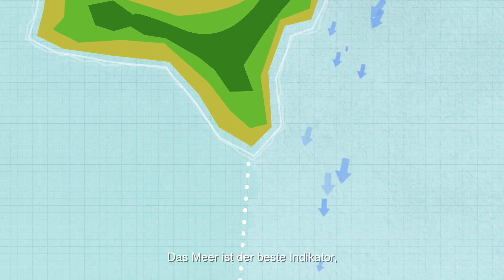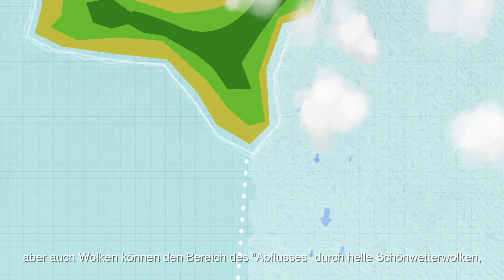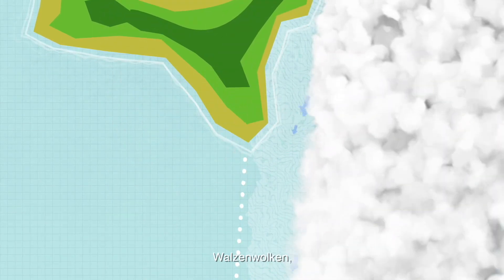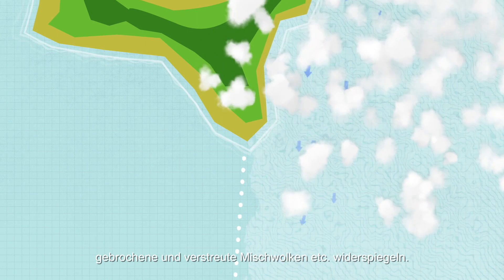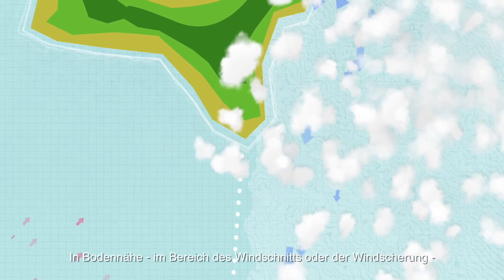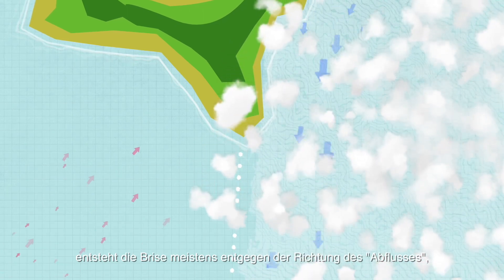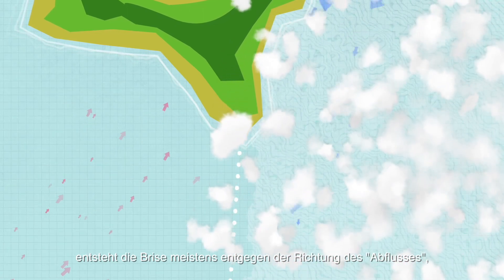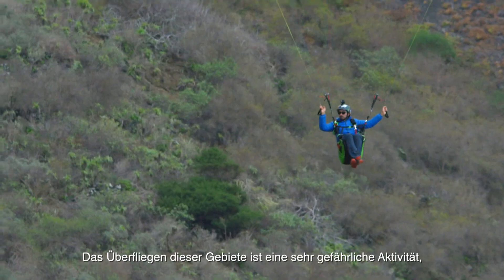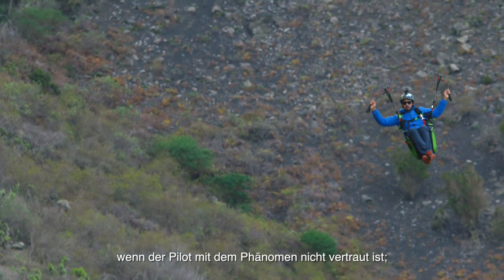The sea is the best indicator of outflow areas, although clouds can also reflect them through bright spells, roll clouds, and broken or scattered clouds at ground level. Near the wind cut or wind shear, the breeze usually originates in the opposite direction of the outflow — very often in the completely opposite direction. Flying over this area is a very dangerous activity if the pilot is not familiar with the phenomenon.